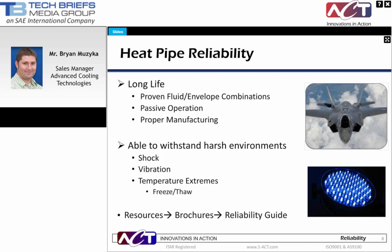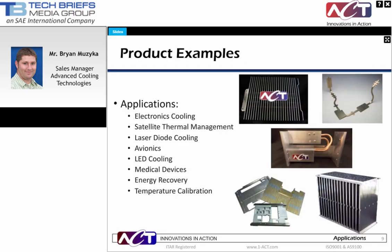Another favorable characteristic of heat pipes is that they can be used across a large range of applications. Basically, any heat source with a temperature limitation is a potential candidate for a heat pipe. The examples shown here include a heat pipe heat sink for optical equipment, a heat pipe used for satellite thermal management, an assembly used for LED cooling, and conduction card frames and conduction chassis for military electronics or avionics applications.